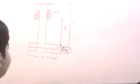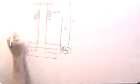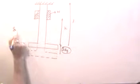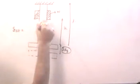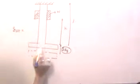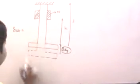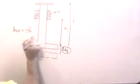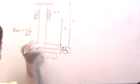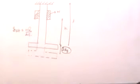We have seen that the deflection due to static loading is essentially delta_st, which is equal to WL by AE, where W is the weight that loads the prismatic bar. Now, how can we find delta_dy?